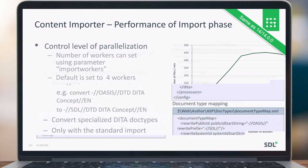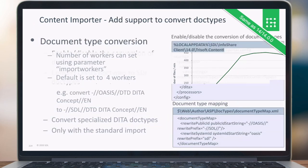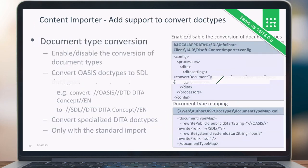Content Porter also added support for converting document types. You can enable or disable conversion of different document types, and converting between the OASIS document type and the S1000D document type is also supported. This is only available with the standard import.